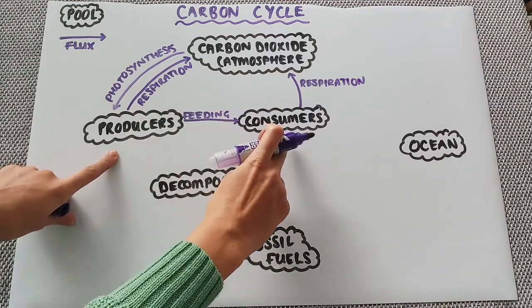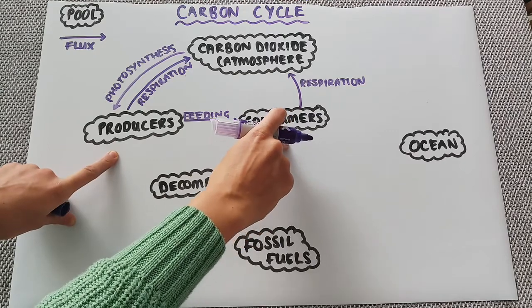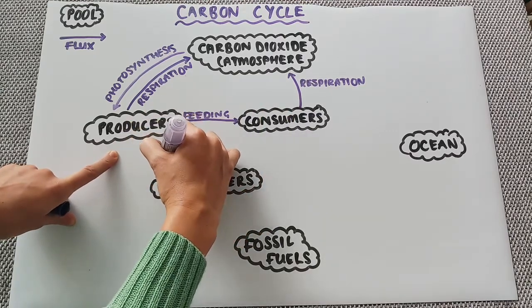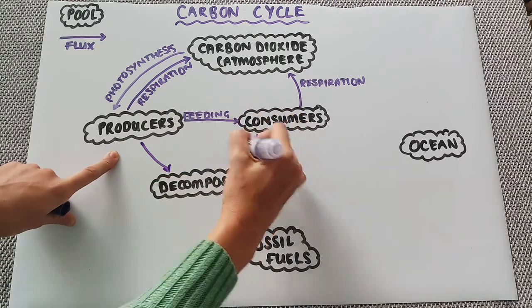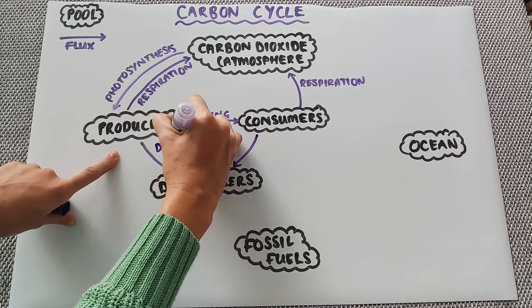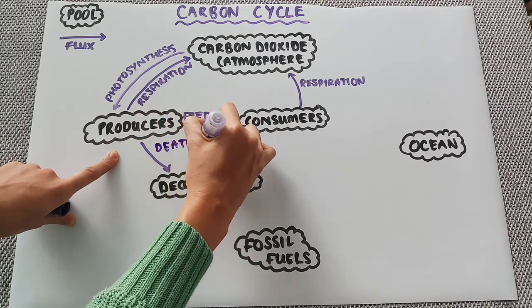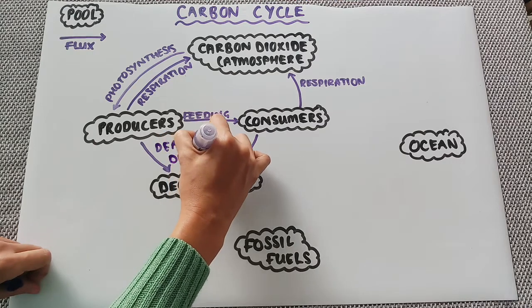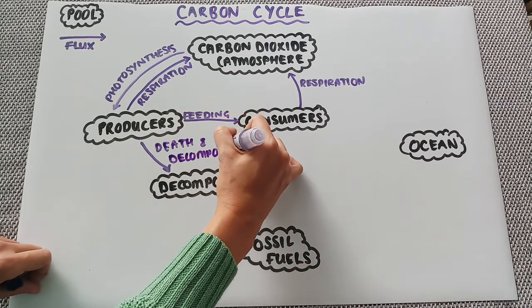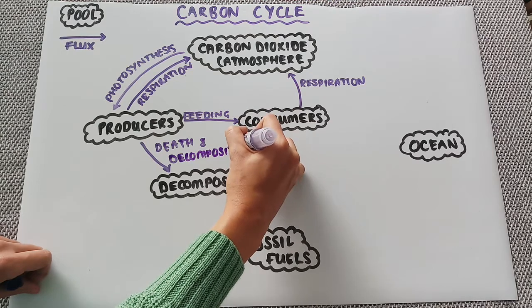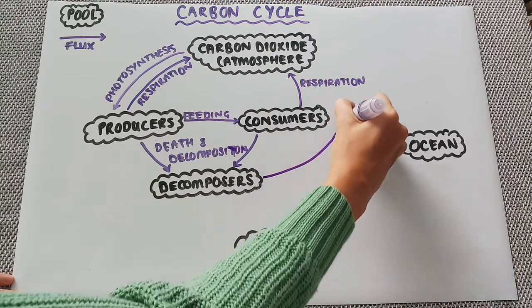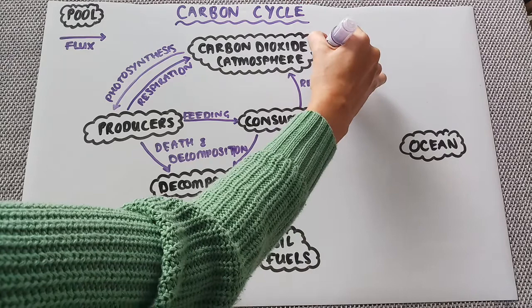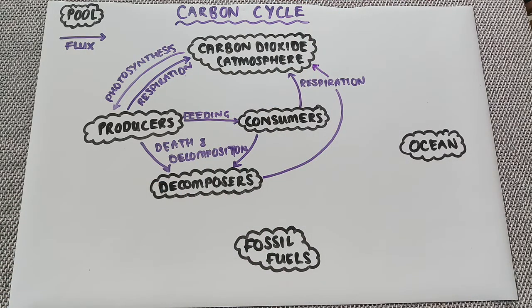Now with both the producers and the consumers, sometimes if a producer is not eaten it might just die naturally and therefore it will go to the decomposers. And consumers also will go through death and decomposition. So the carbon is then used in the decomposers. So the decomposers will also do the process of respiration, releasing carbon dioxide into the atmosphere.